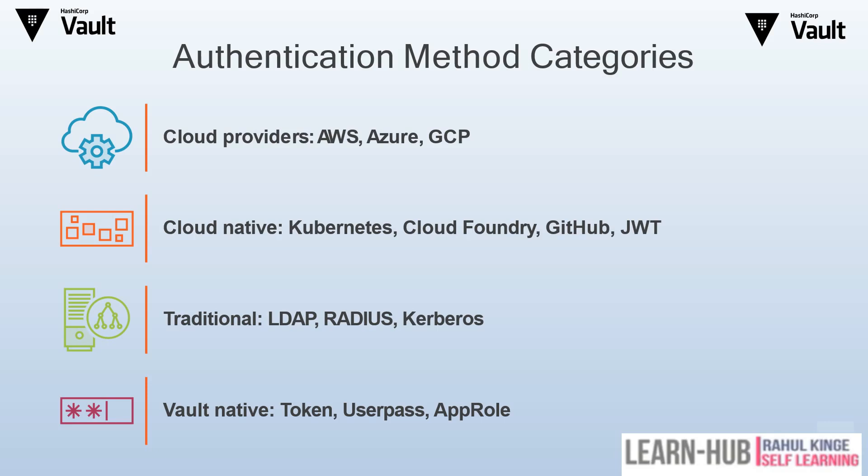In this session let's discuss the authentication methods provided by Vault. If we already have authentication via AWS or Azure, we can make use of that, or cloud-native ways, or traditional ways like LDAP, AD, Kerberos. Vault also has native methods: token, user-pass, and AppRole. In this session we will explore more about these vault-native methods.